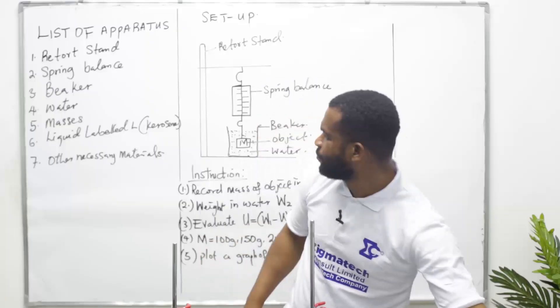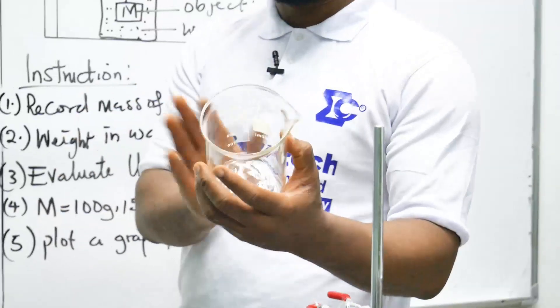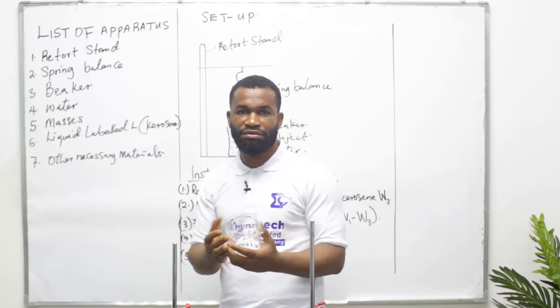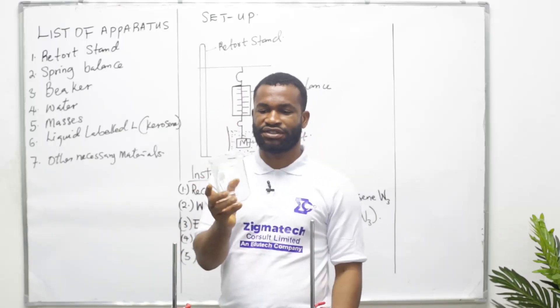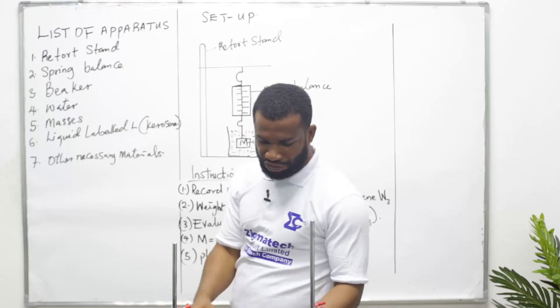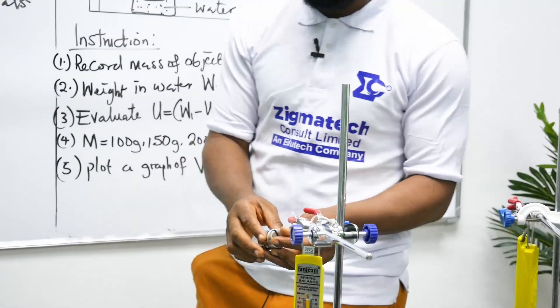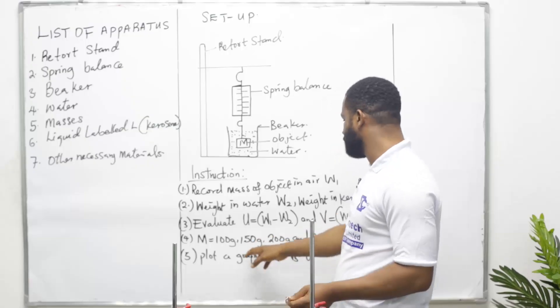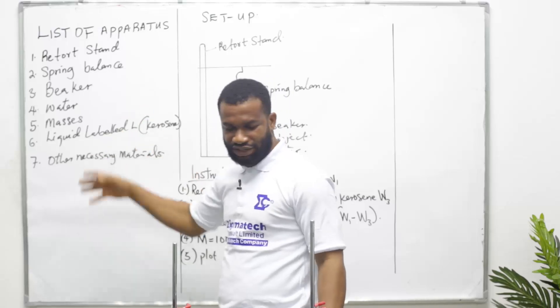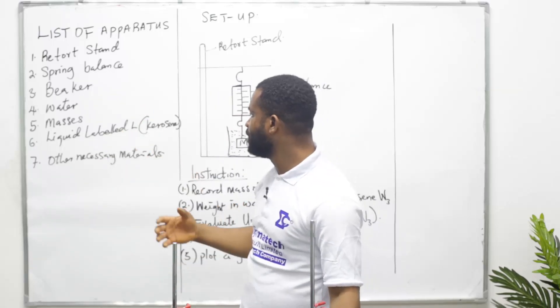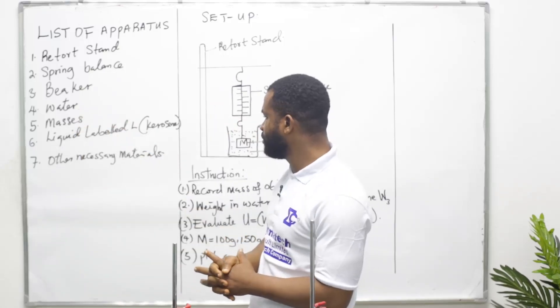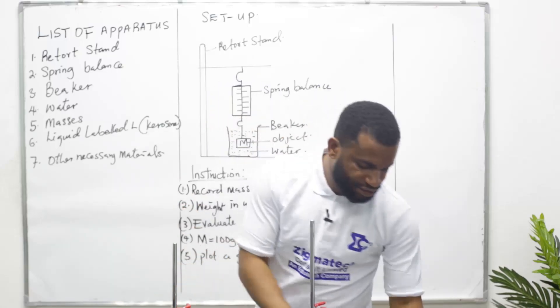This is the spring balance, and it comes with different designs. We have a beaker - they didn't tell us the size, whether it's 500 milliliter or whatever, but any one you have this size is good enough. We have a set of masses. The masses we have here based on the question are 150, 200, and 250 grams, so with this we can achieve that. We have liquid kerosene and water which we'll be using when we start the experiment.